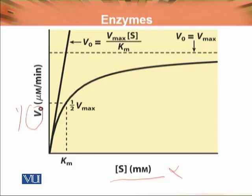We plotted this provided that the enzyme concentration is constant. Initially, V0 is almost directly proportional to the substrate concentration. Later, at a certain level, a plateau occurs where V0 becomes almost equal to Vmax but never actually touches it.